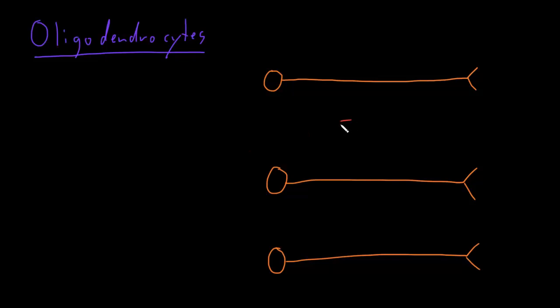I'll draw the somas for a couple of oligodendrocytes, one here and one here, and each oligodendrocyte will extend a few processes, maybe up to a few dozen processes each, toward the axons of neurons.